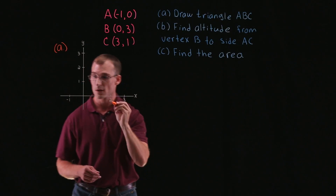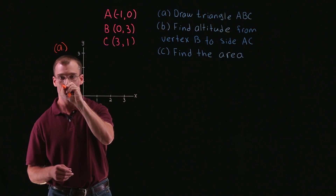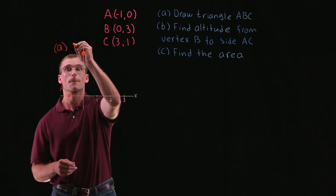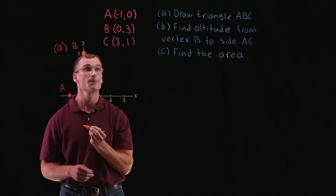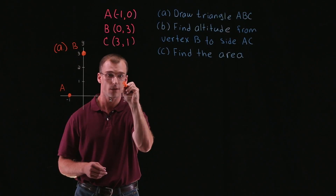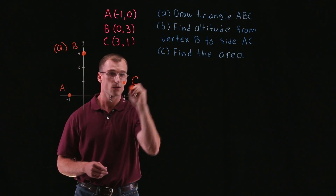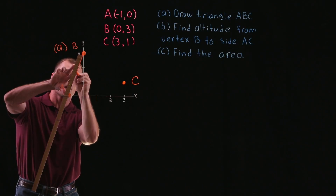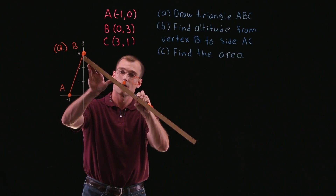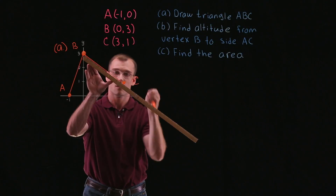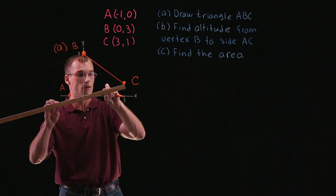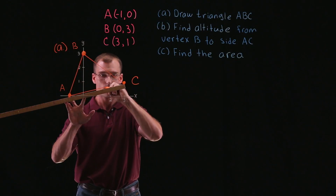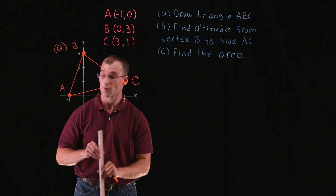So A is at point negative 1, 0 — X is negative 1, Y is 0. Here's A. Then B, we have X is 0, Y is 3 — point B. And then lastly, C: X is 3, Y is 1 — right about here. There's our point C. We want to draw the triangle, so we'll go ahead and connect these. All right, there's our triangle ABC.